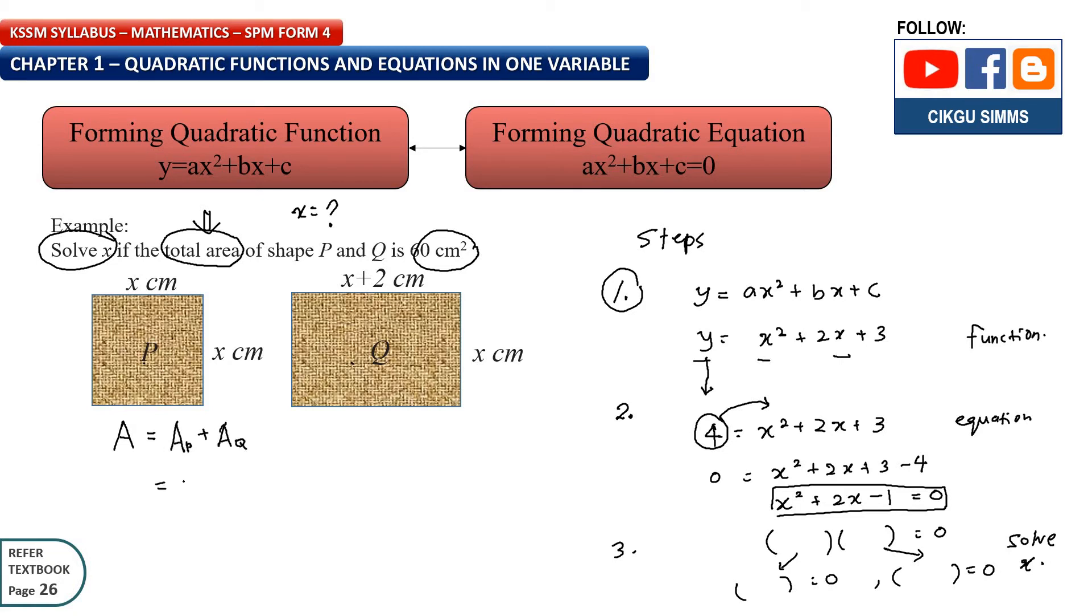So we can write area is equal to this area plus this area. So area of P plus area of Q. Area of P is x times x. And area of Q is x plus 2 times x. And then this part is x squared. And then this you can multiply inside, plus x squared plus 2x. And then this is 1x squared plus 1x squared. You will get 2x squared plus 2x. So this is your function.